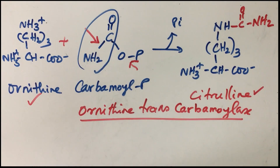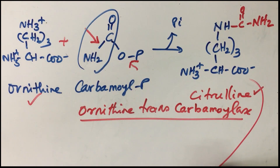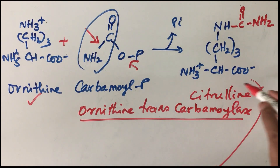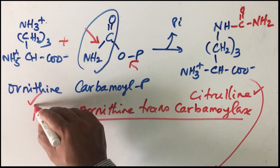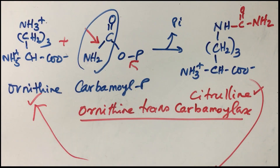The remaining reactions are going to take place in the cytoplasm. Citrulline has to be transported out of the mitochondrial matrix into the cytoplasm using an antiport mechanism: for each outgoing citrulline, one ornithine is transported back into the mitochondrial matrix to maintain concentration. Now citrulline enters the cytoplasm for step number three.